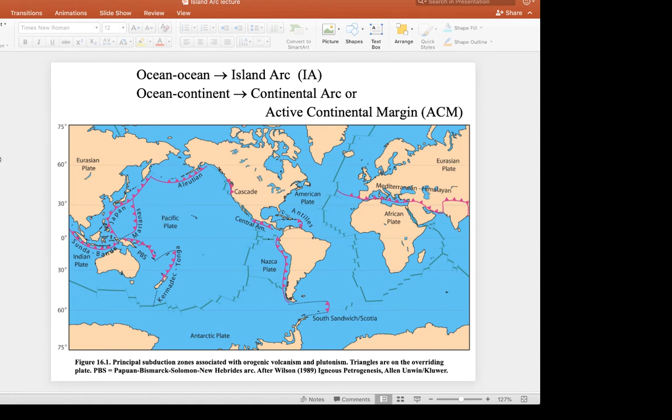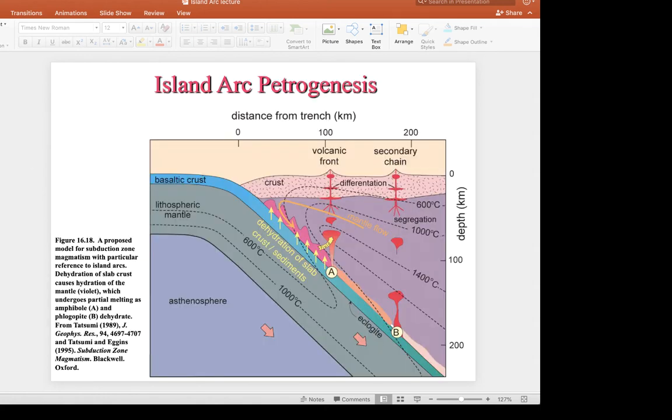And if we look at these in cross-section, it looks something like this. So here this would be the Eurasian plate, for example, and then the downgoing slab would be the Pacific plate.